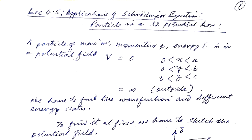We are going to read about the applications of the Schrödinger equation. This is another case: the particle in a three-dimensional potential box. In the previous lecture, we already read about the one-dimensional infinitely deep potential well, and now here we are going to read about the three-dimensional potential box.